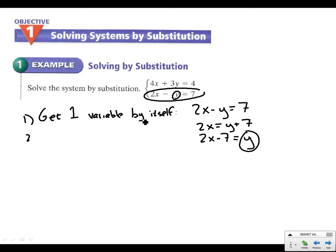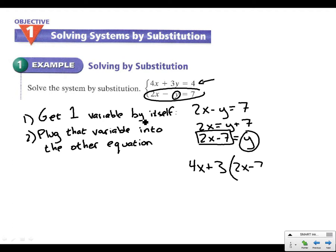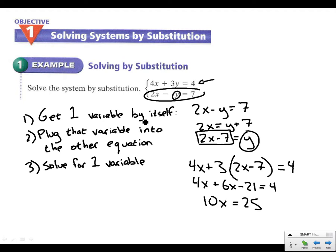Step 2. Plug that variable, whatever you got by itself, into the other equation, whichever one you didn't solve for. So step 2 here. We're going to go back to the other equation. And we had 4x plus 3. But then instead of writing y, I'm going to plug in what it equals. 2x minus 7 equals 4. Step 3. Solve for 1 variable, whatever you see. Because now we just have x's. So we're going to solve for x's here. We've got 4x plus 6x minus 21 equals 4. So we've got 10x equals 25. And so if we divide by 10, we're going to get x equals 2.5.